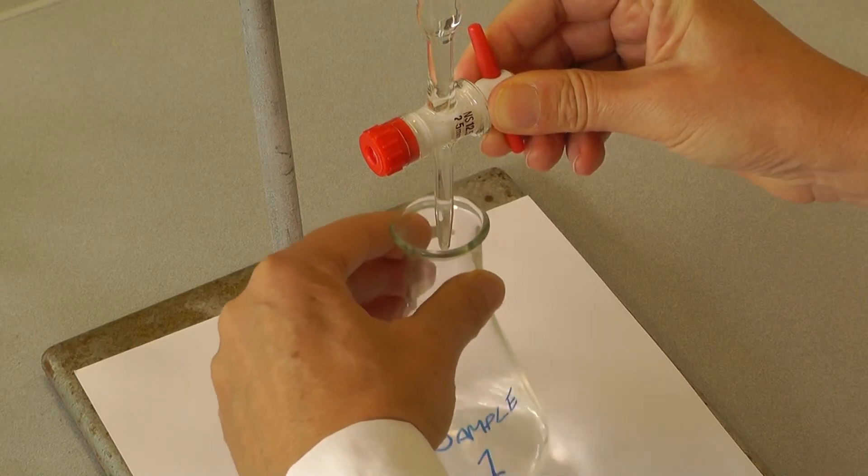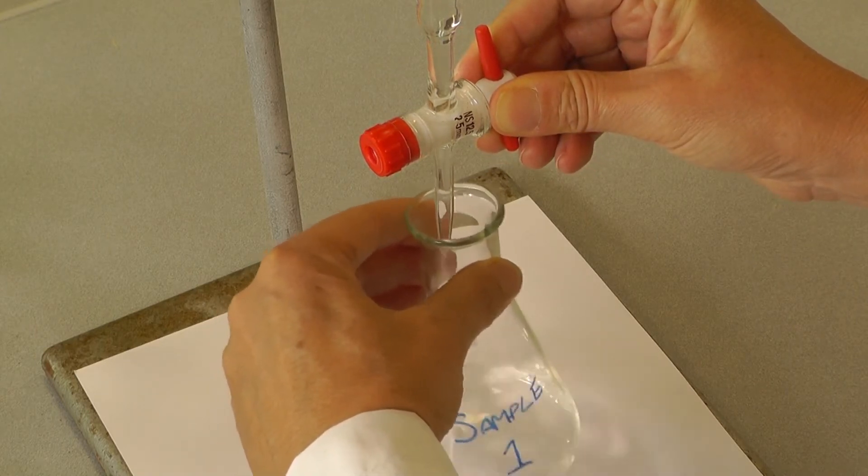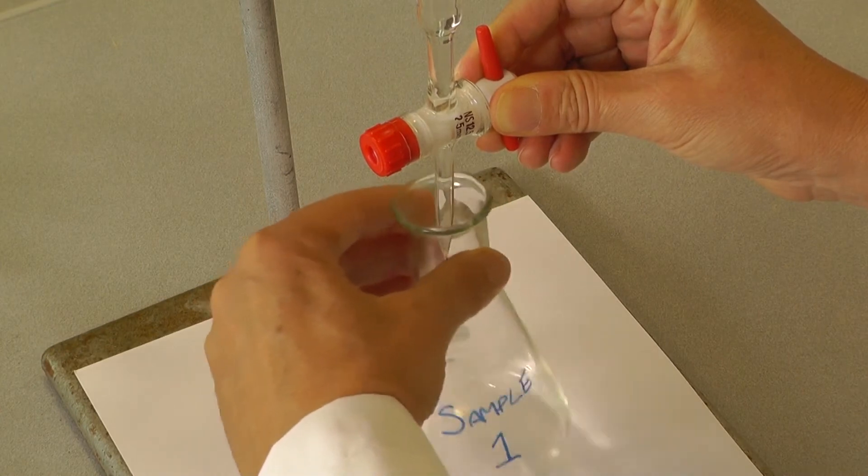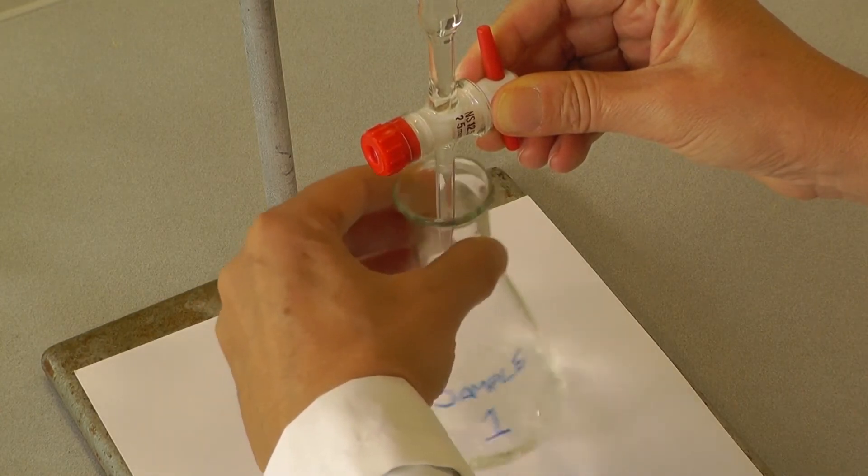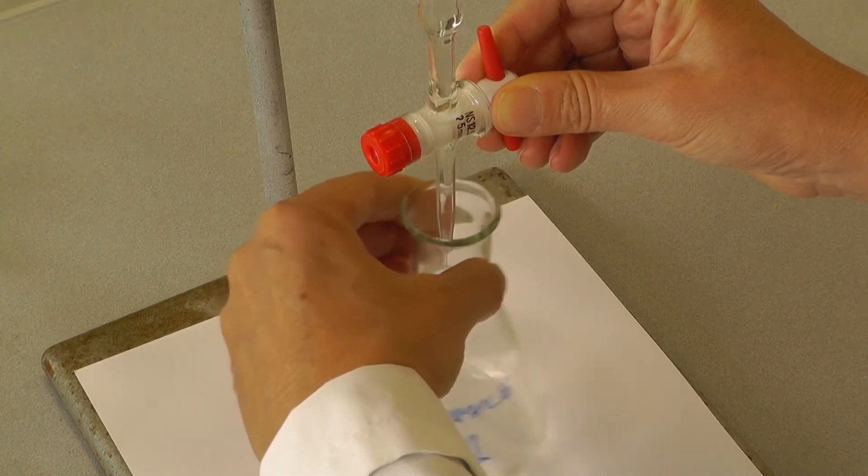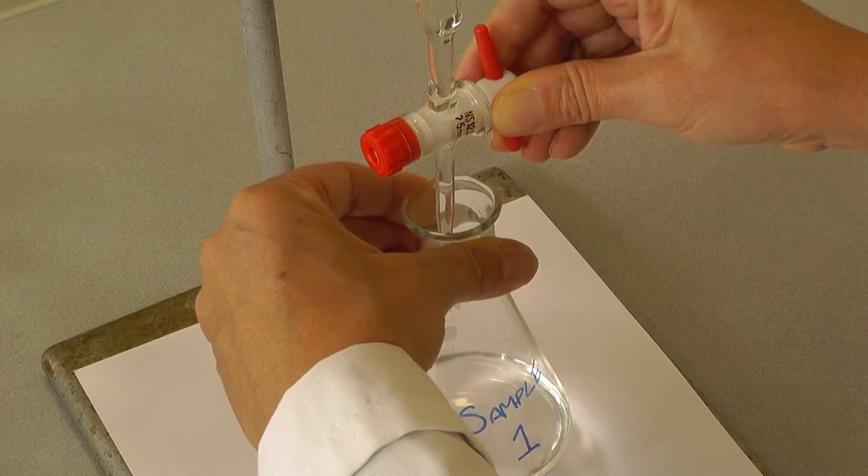Keeping one hand on the flask and one hand on the burette, open the tap as you swirl the flask. Initially, the solution can be added quickly, but you must keep swirling and pay close attention to the reaction mixture in the flask.